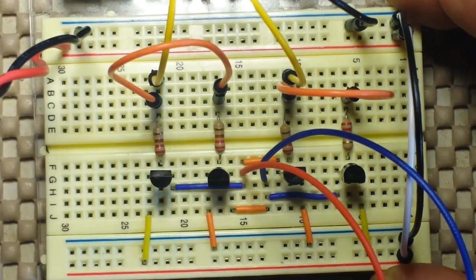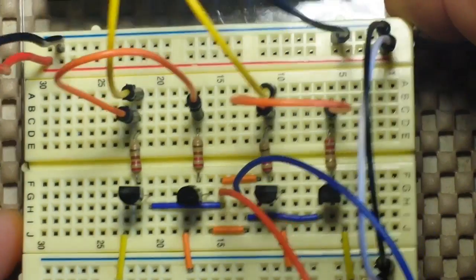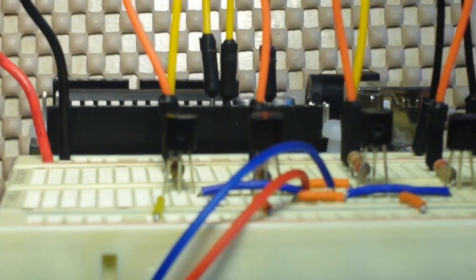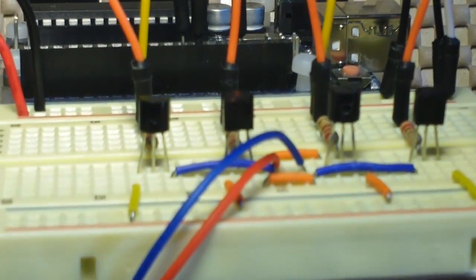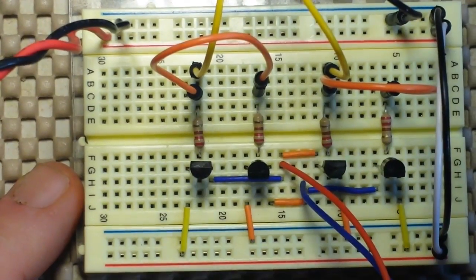We have 220 ohm resistors between the signal lines and the base of the transistors, and these are just linked together like this. Now our four transistors here, I will bring this up and see if I can get it to actually focus for you. Anyway, they are 2N4401 NPN transistors.